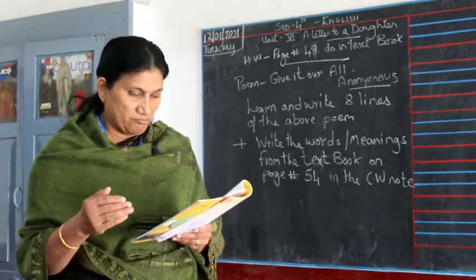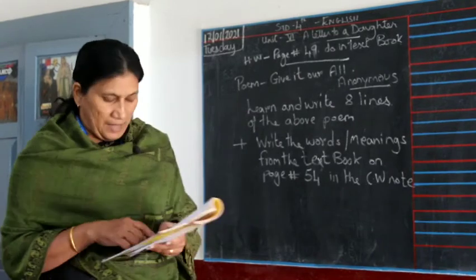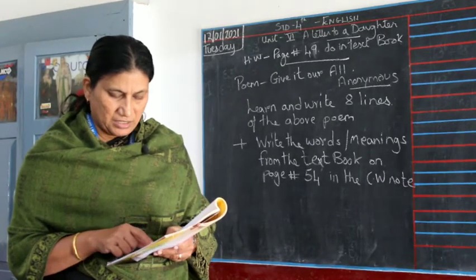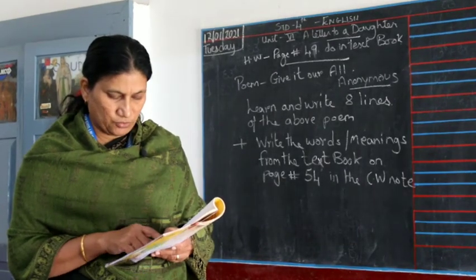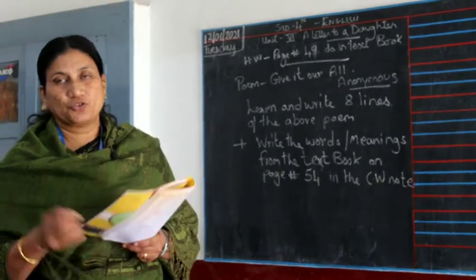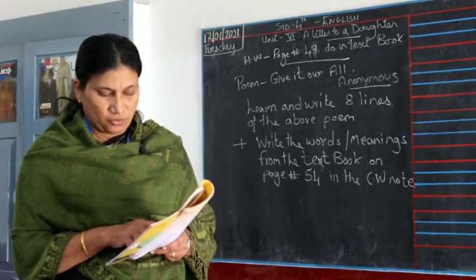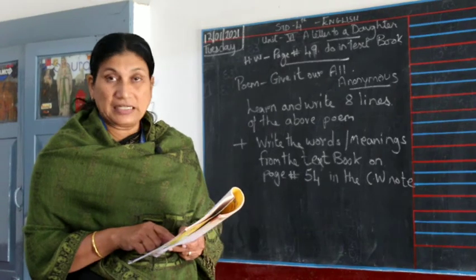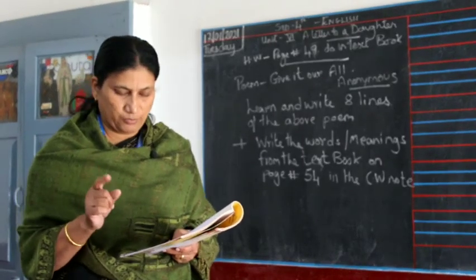Coming to the third main on page number 49: construct a story from the outlines given below and give it a suitable title. Outlines: boys playing by a riverside; a boy falls into the river; boys helpless; none of them knew to swim; a villager comes to the boys' help and saves the drowning boy. You have to fill in words over there. For example, the first one: 'Boys playing by a riverside — suddenly a boy falls into the river.'